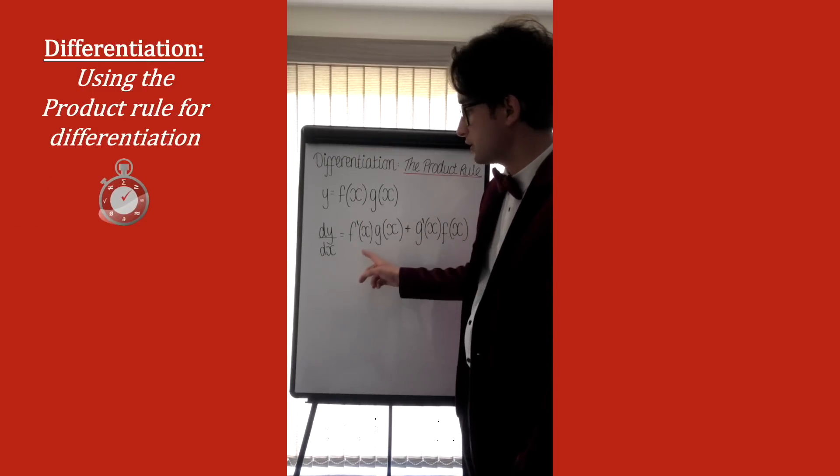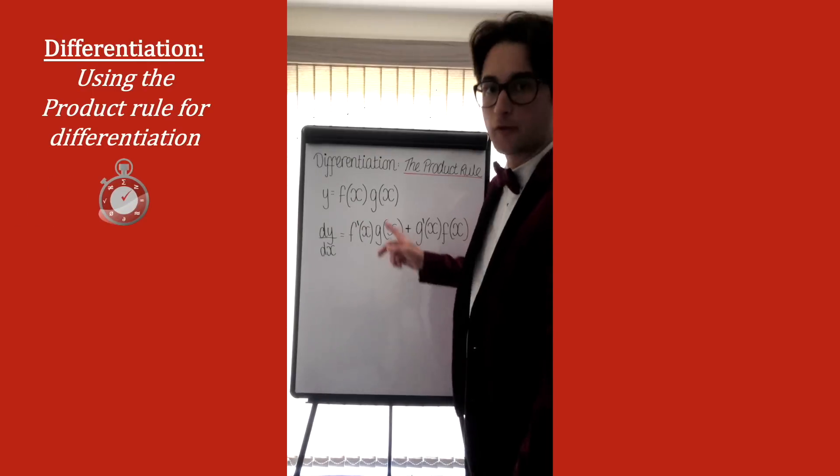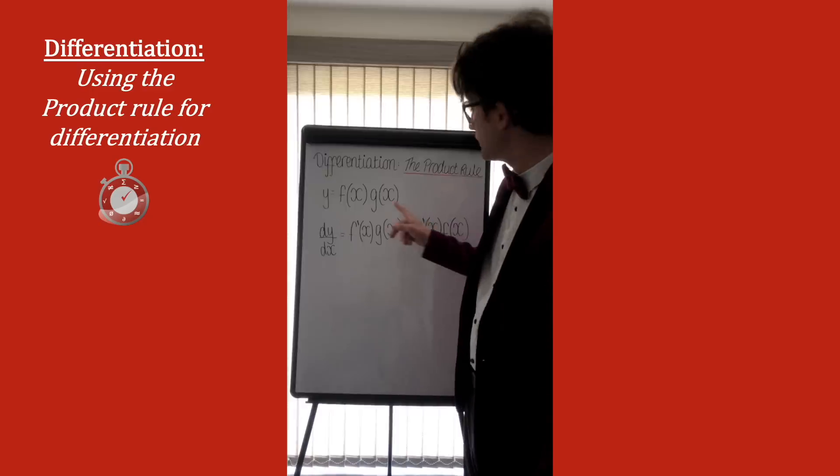And the way we do this is we differentiate the first function and multiply it by the other one, and then we add the other way round scenario, so the second one differentiated, multiplied by the first function.